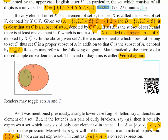That's the difference between A without brackets and A with brackets. A with brackets is a set. A without brackets is an element.